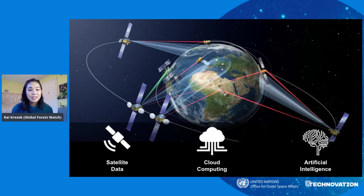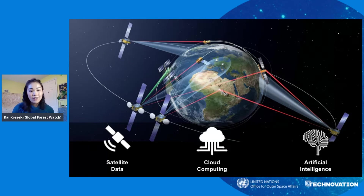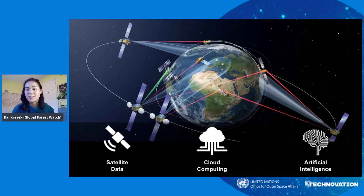Instead of having a human go through each photo individually, which would be an enormous effort, a computer algorithm is trained to identify forests in different satellite photos. Then this information on where forests are located is put together to create global datasets.